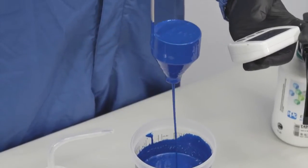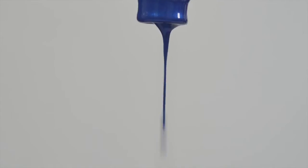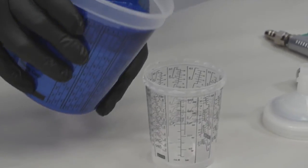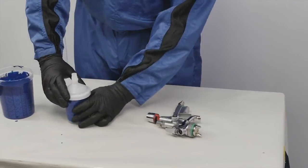After stirring, recheck viscosity using the same process as shown earlier. Once the proper thickness is achieved, the basecoat is ready for application.